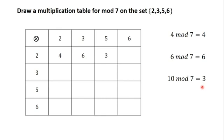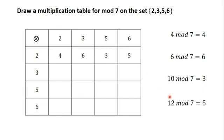In the previous video I showed you a simple trick you can use to find a value when the number is bigger than the modulus — you just subtract the modulus from the number until you get a value that is smaller than the modulus. So here we subtract 7 from 10 to get 3, and since 3 is smaller than 7, that means 10 mod 7 is 3. Continuing: 2 × 6 is 12, and 12 minus 7 gives us 5, so 12 mod 7 is 5.